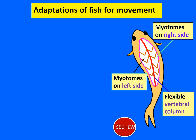To recap, the three adaptations of the fish for movement to reduce water resistance are: a streamlined body shape, scales that point backwards on the body surface, and a slimy coating of mucus to reduce the friction of water flowing around its body.